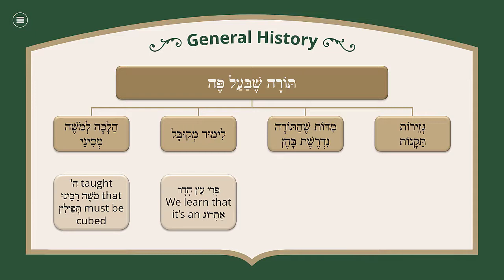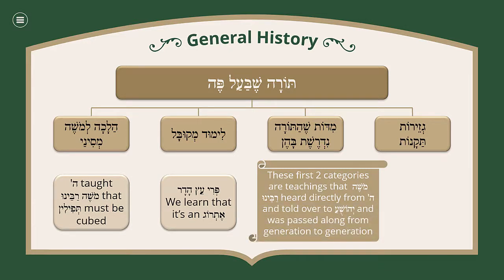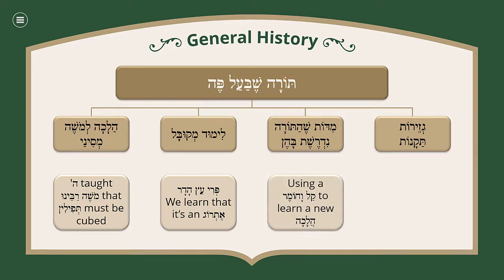Then we have Middos, Teirin, and Drashos. Before we do that we have to point out something very important: these first two categories are teachings that Moshe Rabbeinu heard directly from Hashem and told over to Yehoshua, passed along from generation to generation. These are things Moshe Rabbeinu always knew — unlike other things where it says Moshe Rabbeinu heard Rabbi Akiva teaching things he never heard before. These first two categories are teachings Moshe Rabbeinu was 100% aware of, given over by Hashem orally. Now for Middos, we focus on Kal VaChomer: you can use it to learn a new Halacha — for example, if a person's granddaughter is forbidden to him through his daughter, certainly his daughter is forbidden to him. So we're learning an Issur through a Kal VaChomer. This was not told to Moshe Rabbeinu, but the tool was given for these Limudim to be derived, and some of them Moshe Rabbeinu derived and some were only learned in later generations.